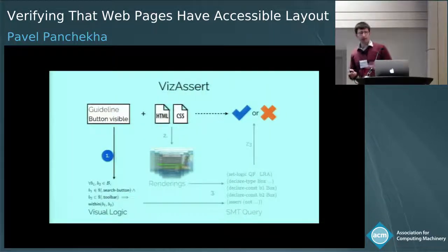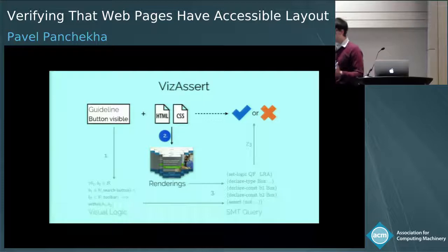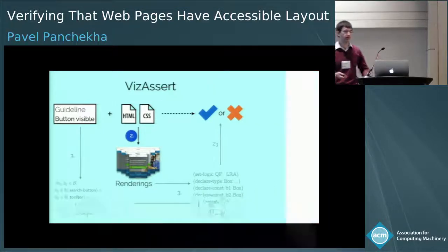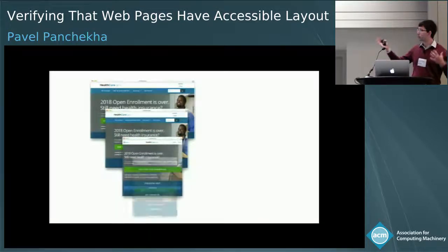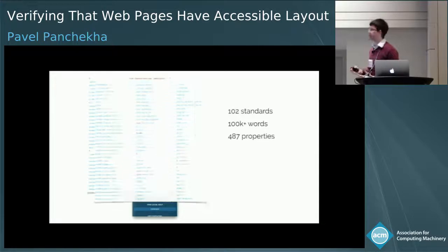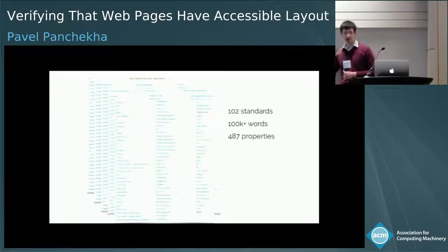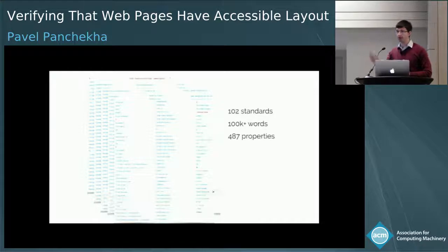Now let me tell you about how we construct this space of possible renderings of a web page. Across different parameters, a web page can have a lot of different renderings. How it can be rendered is defined by the CSS standards — there are just a bit over a hundred of these, and they are hundreds of thousands of words of text.